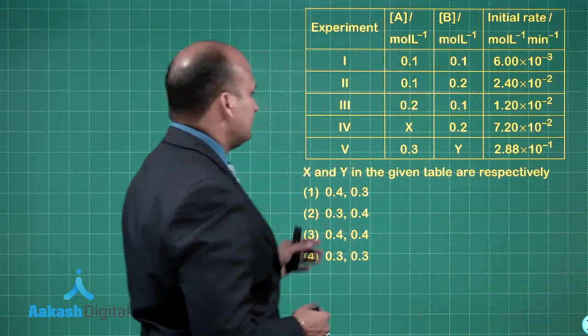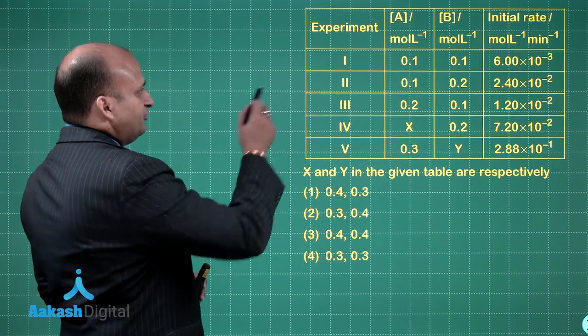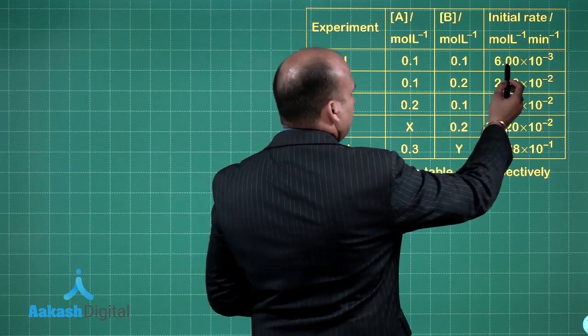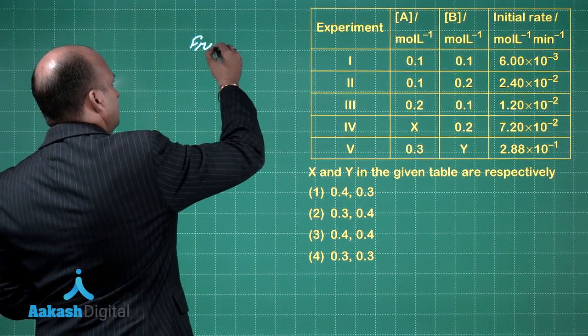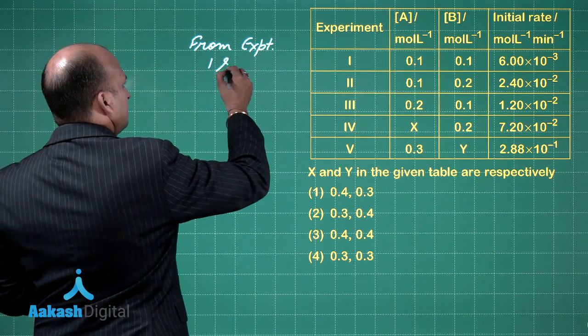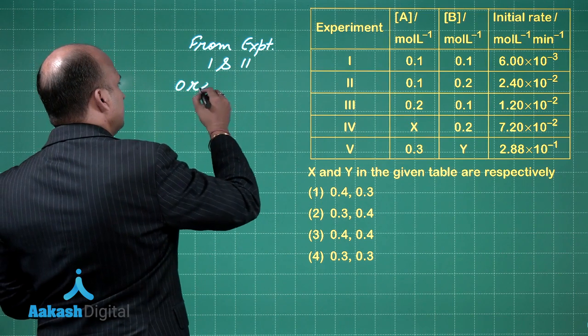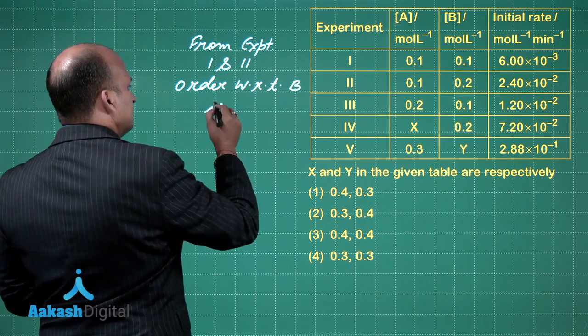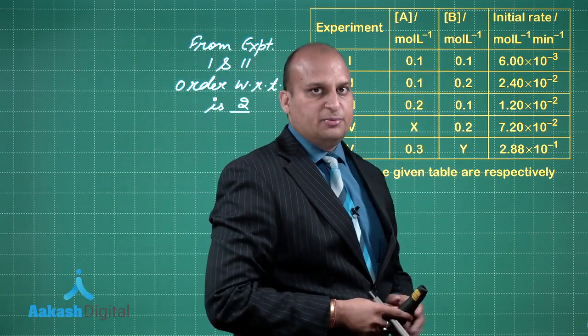Let's see what they're asking first. We have to find out x and y - not the order, but the concentrations of x and y. If I compare the first and second experiment, the rate is becoming 4 times. From experiments 1 and 2, the order of the reaction with respect to B is 2, because we are doubling the concentration of B and the rate is becoming 4 times.